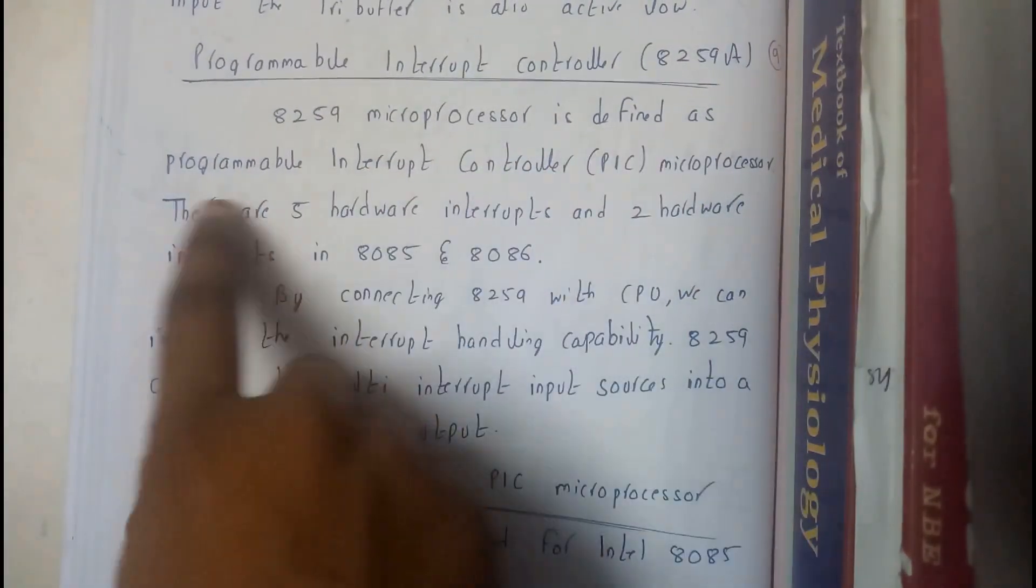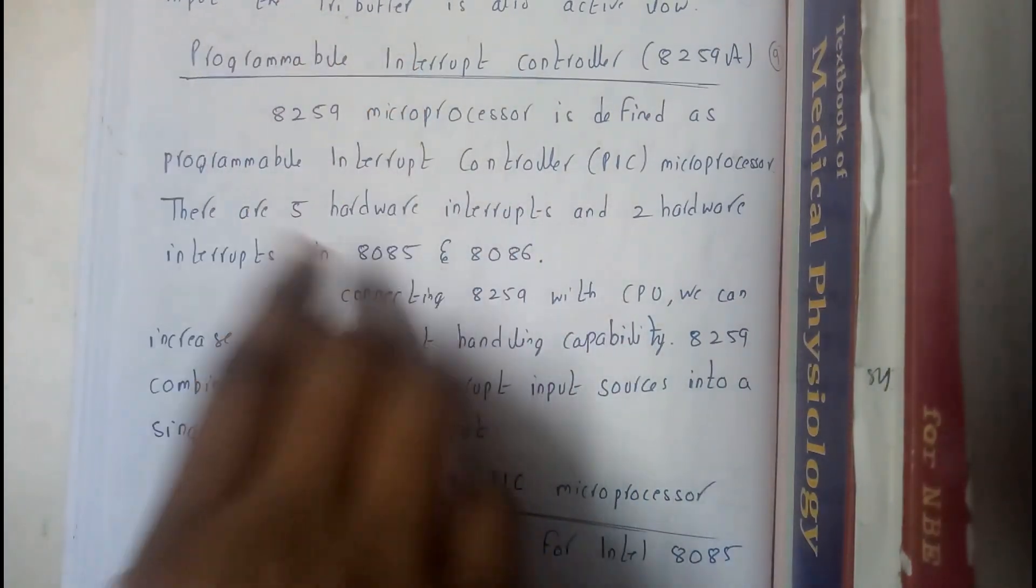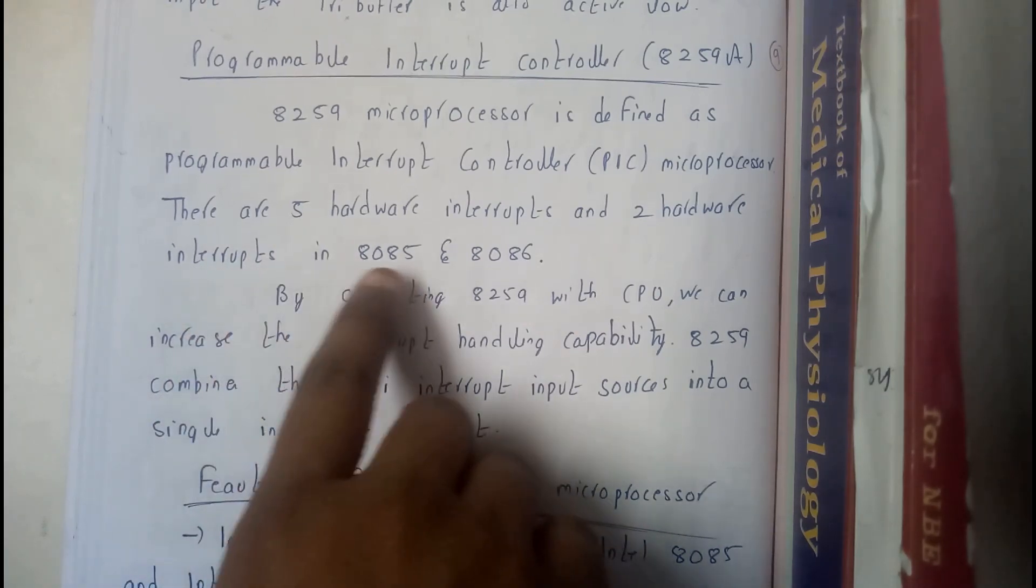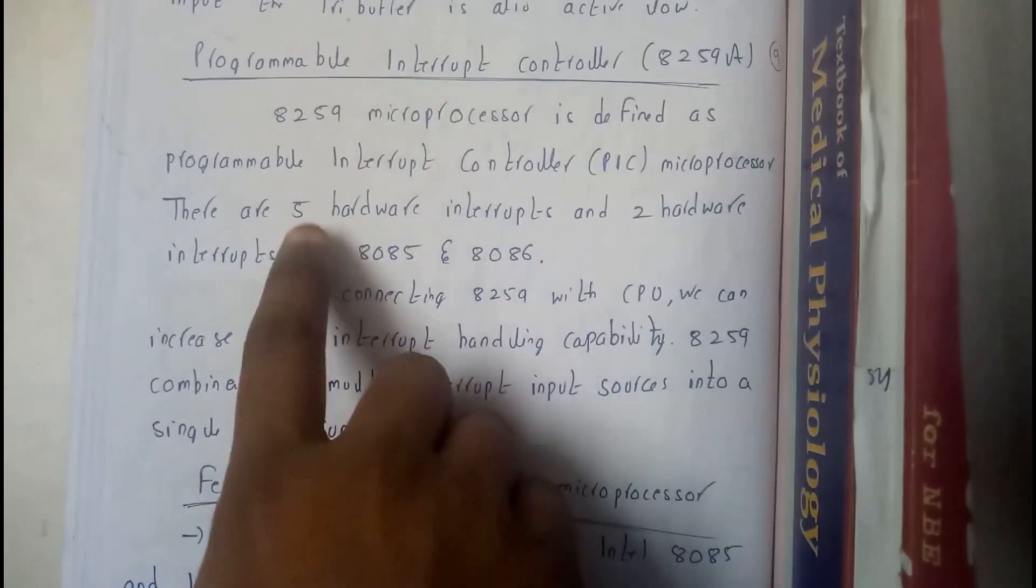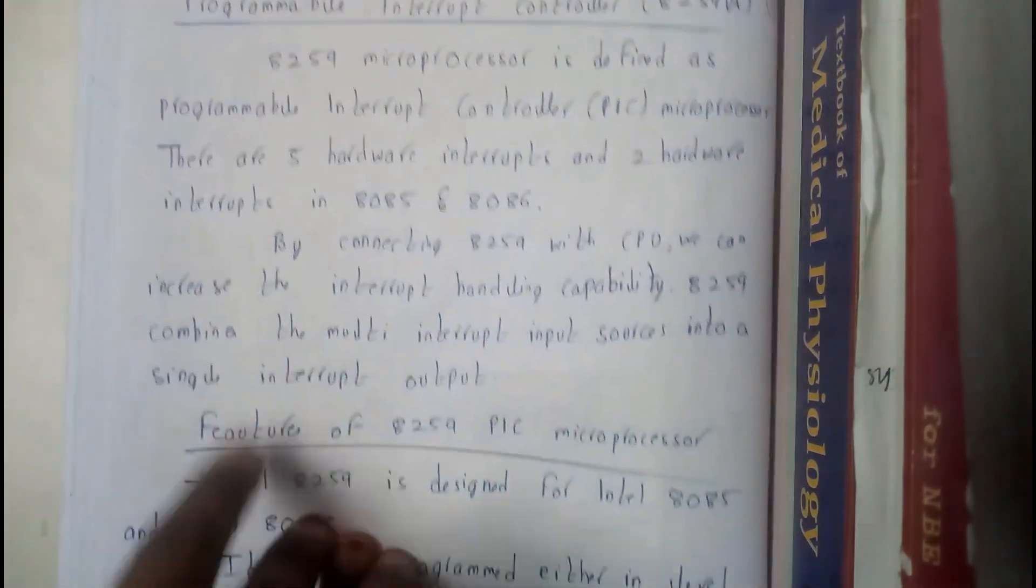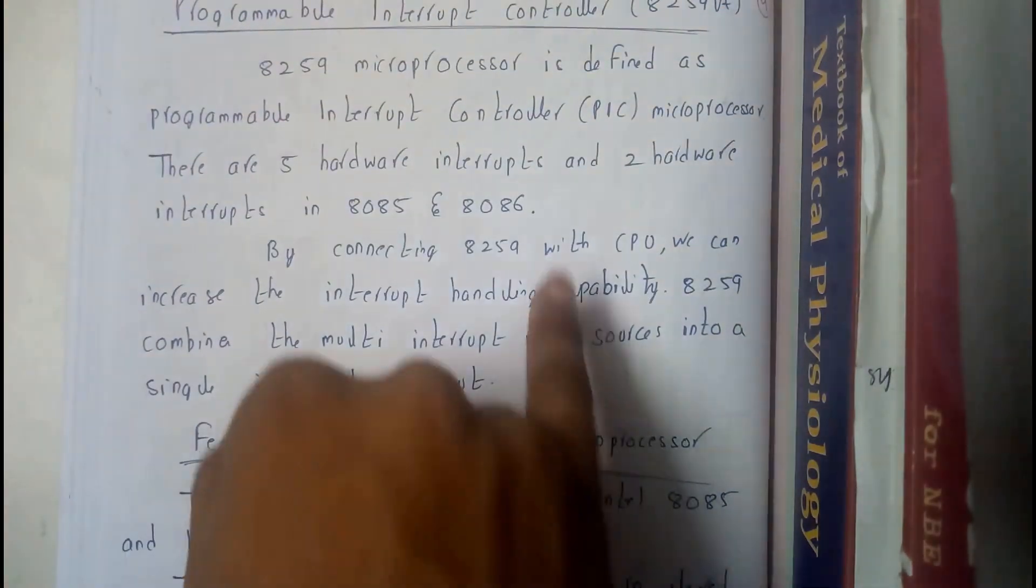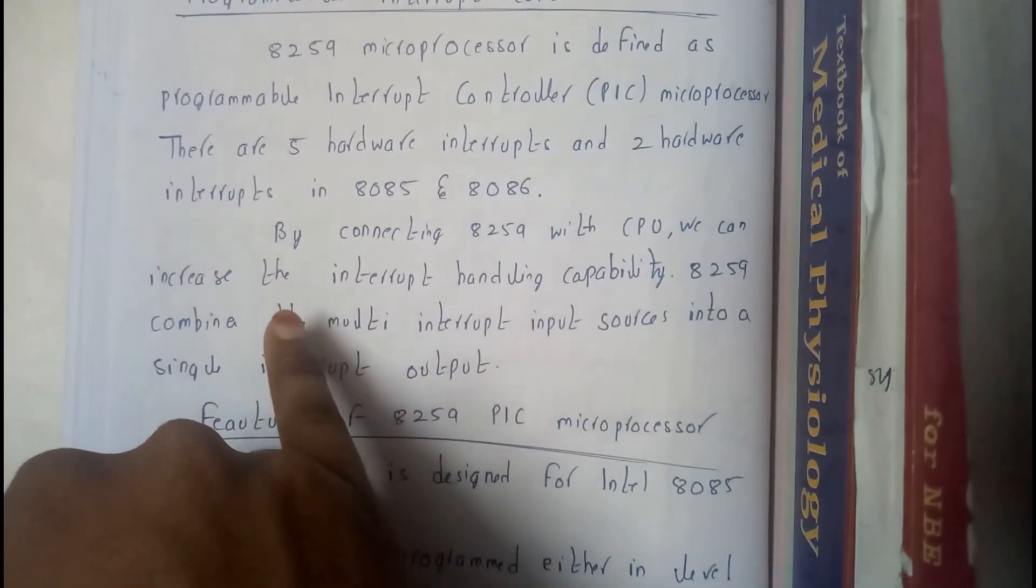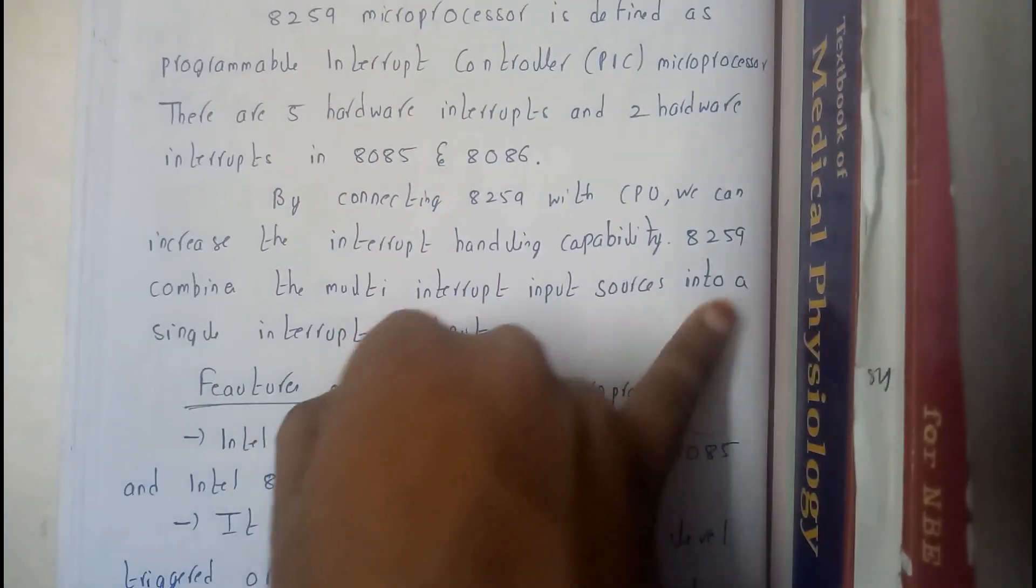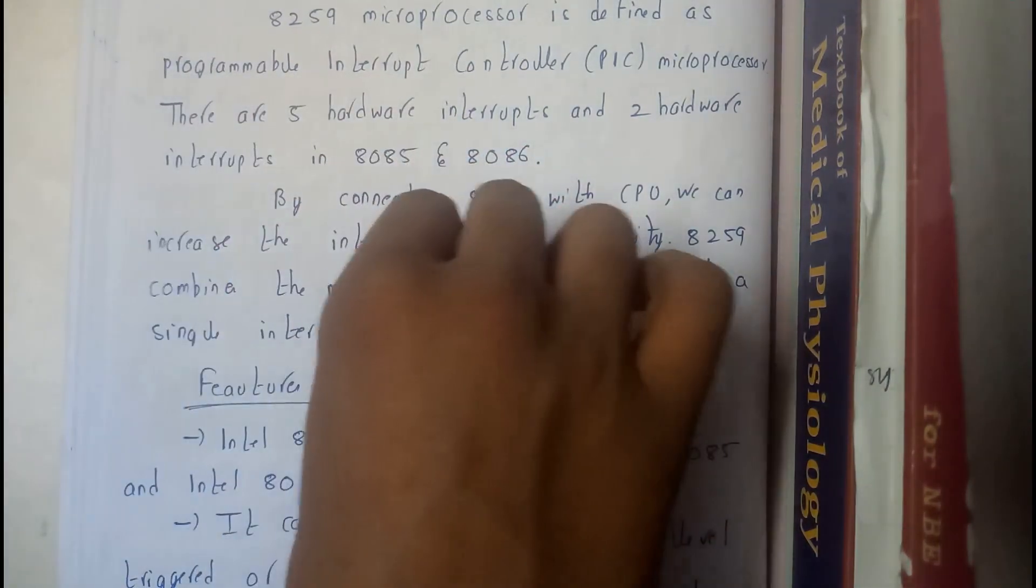8259 microprocessor is defined as programmable interrupt controller, which is nothing but PIC microprocessor. There are 5 hardware interrupts and 2 software interrupts in 8085 and 8086. By connecting 8259 with CPU, we can increase the interrupt handling capacity. 8259 combines the multiple interrupt input sources into a single interrupt output. So even if there are many outputs, it's going to give a single interrupt.